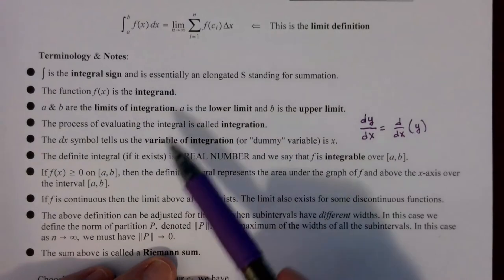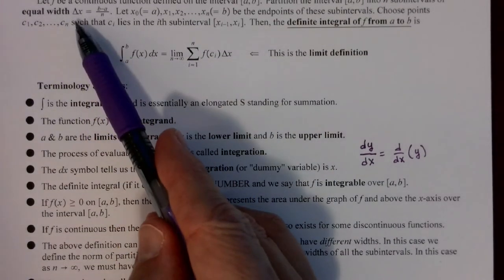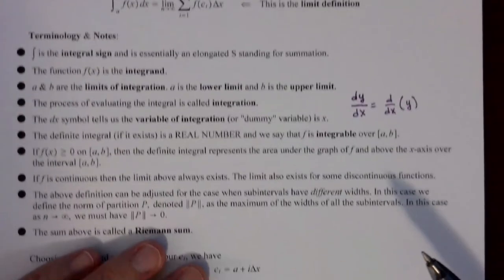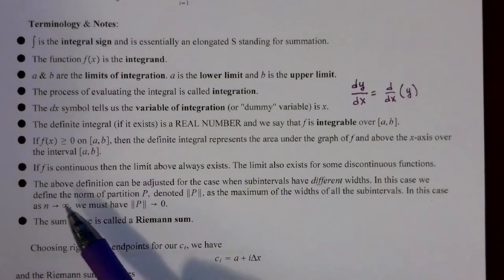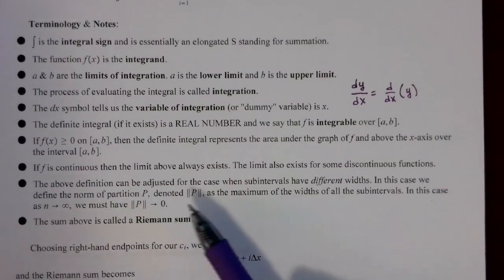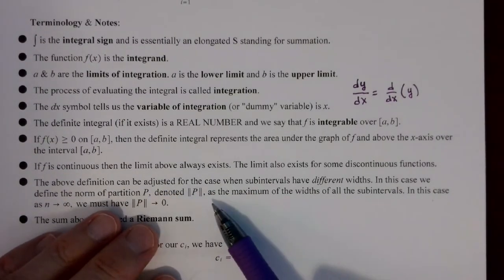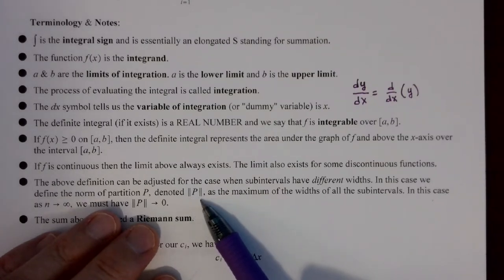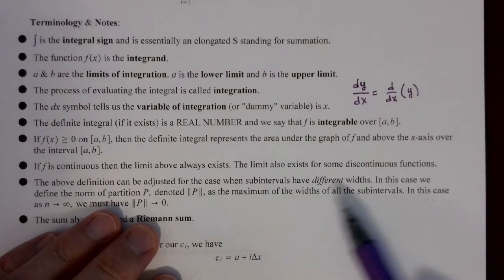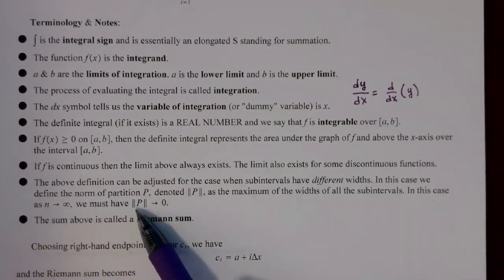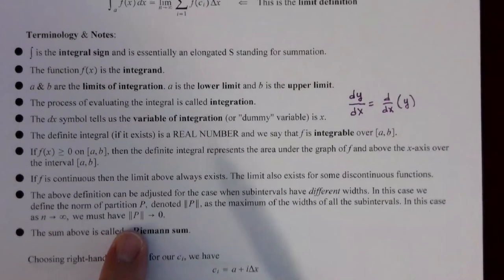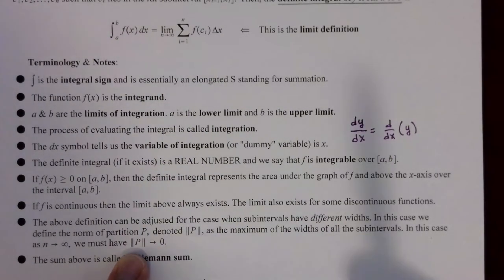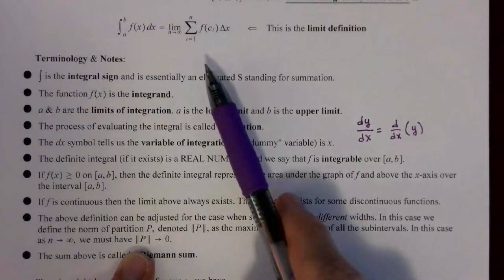This definition uses equal-width subintervals, and that's how we'll proceed. In general, though, the subintervals don't have to be equal width, and the definition can be adjusted. In that more general case, you'll see the norm of the partition — the maximum width of all subintervals — sometimes denoted with double absolute value bars. As n goes to infinity, that norm must go to 0, so you can replace the limit as n→∞ with the limit as the norm of p goes to 0. We'll stick to equal-width subintervals to keep things simpler.